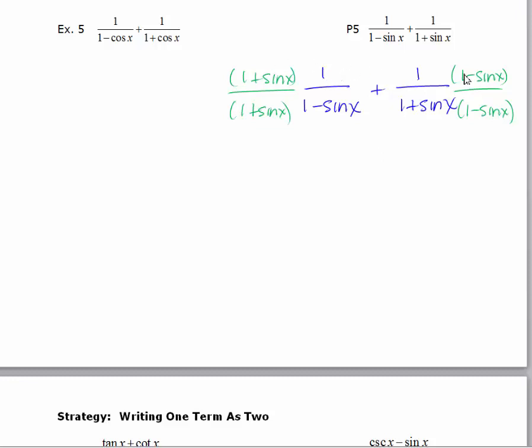I want to distribute my numerators and then combine these. So when I distribute the numerators, I'm going to get 1 plus sine x plus 1 minus sine x. This is extremely similar to example 5. The denominator, again, I'm not going to multiply it out until I'm sure that nothing will cancel.